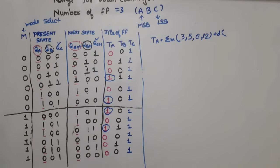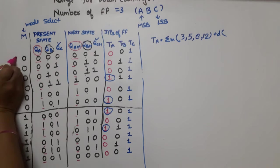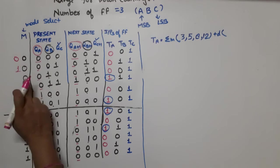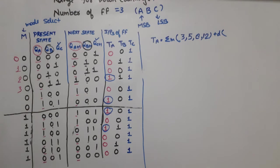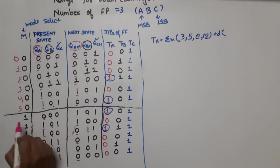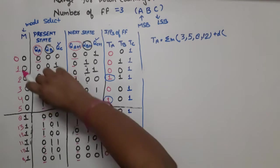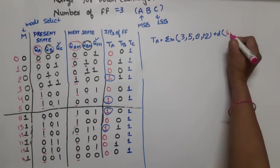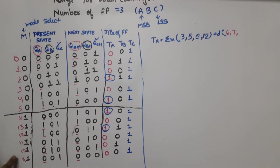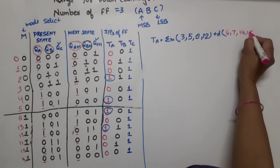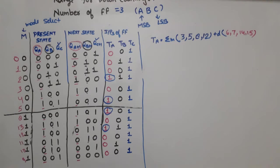Now let's identify don't care conditions. The decimal equivalents of used states are: 0, 1, 2, 3, 4, 5, 8, 9, 10, 11, 12, 13. Missing values are 6, 7, 14, and 15 — these are our don't cares. So for TA: summation m(3, 5, 8, 12) + d(6, 7, 14, 15). For TB: summation m(1, 3, 10, 12) + d(6, 7, 14, 15). For TC: summation m(0,1,2,3,4,5,8,9,10,11,12,13) + d(6,7,14,15).